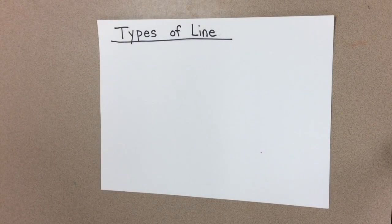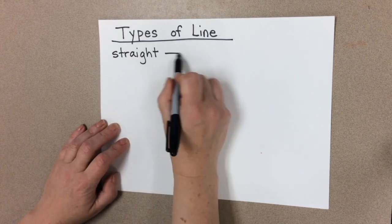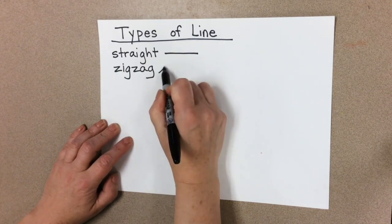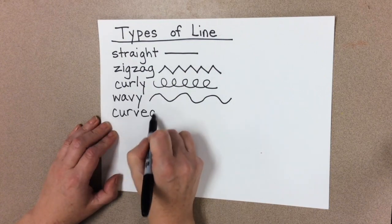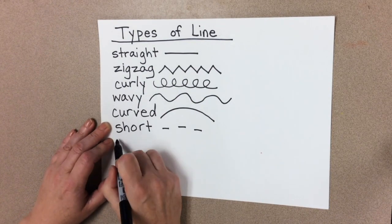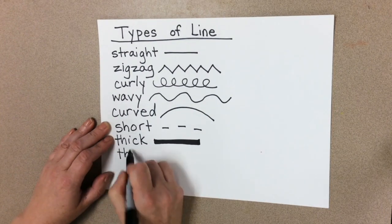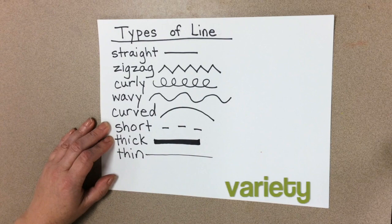Now I will show you some ideas that you can use in your project. Then it will be your turn to make art. In art, we have a number of different types of lines that we can use. Straight, zigzag, curly, wavy, curved, short, thick, thin. And when we use a lot of different types, we call that variety.